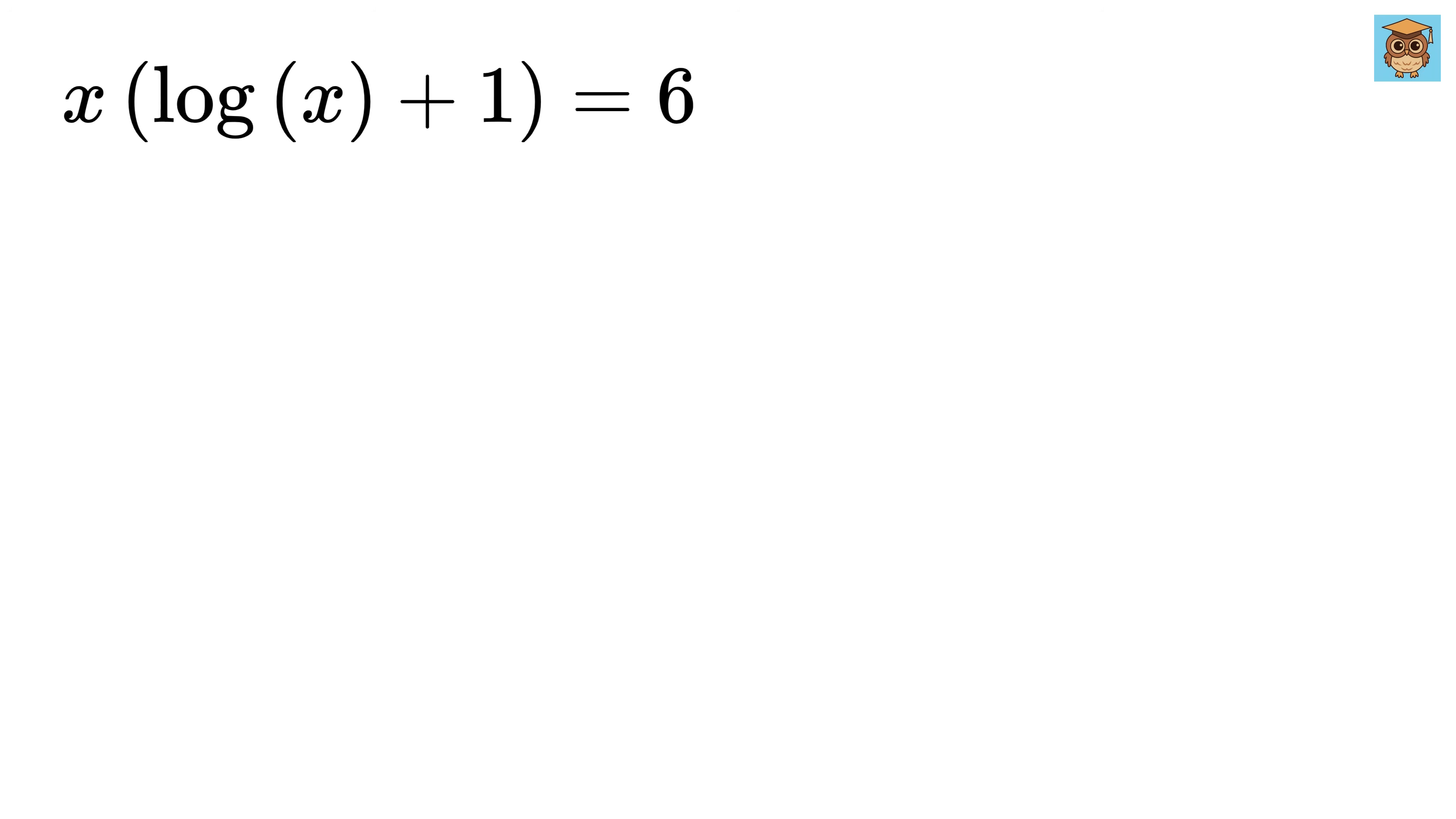Now this equation cannot be solved directly, so we try to bring it in a form where we can use the Lambert W function. Suppose we have a function of the form omega times e to the power of omega, and this omega can be any expression.